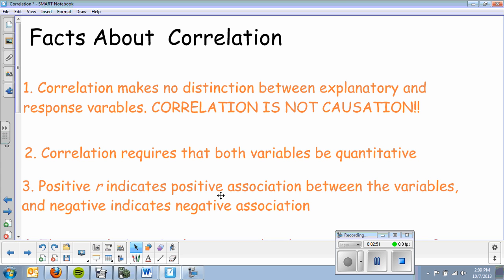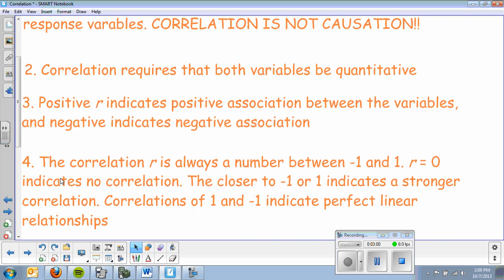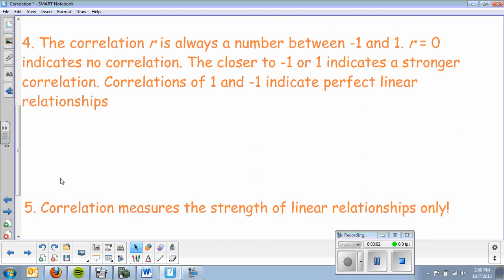A positive r indicates a positive association between the variables, and a negative r indicates a negative association. That makes it nice - just by the sign of the number tells me whether the graph is positive or negative. Correlation r is always a number between negative 1 and 1. If r equals 0, it indicates no correlation. The closer to negative 1 or 1 indicates a stronger correlation. Correlations of 1 and negative 1 indicate perfect linear relationships.